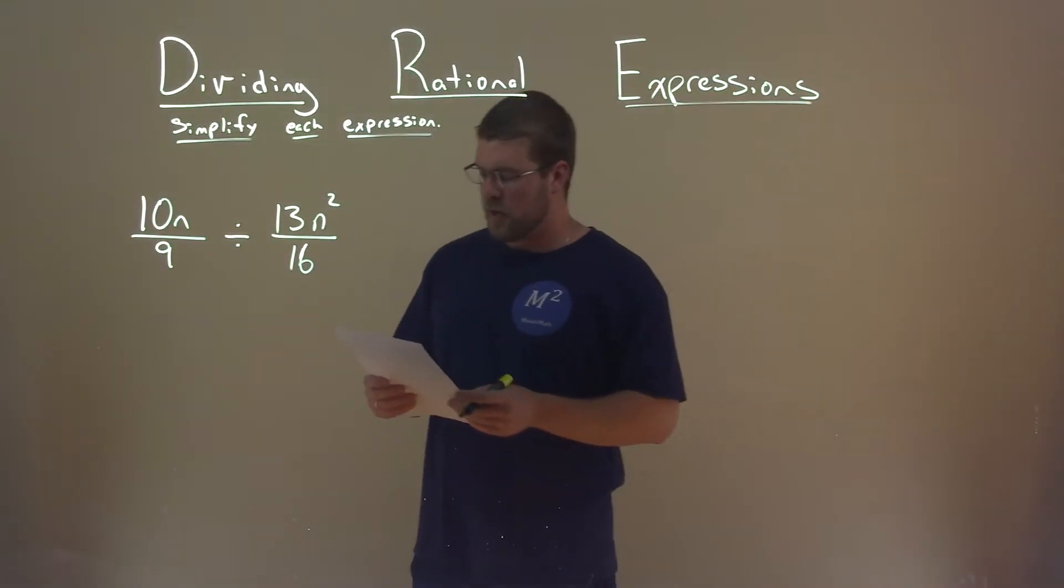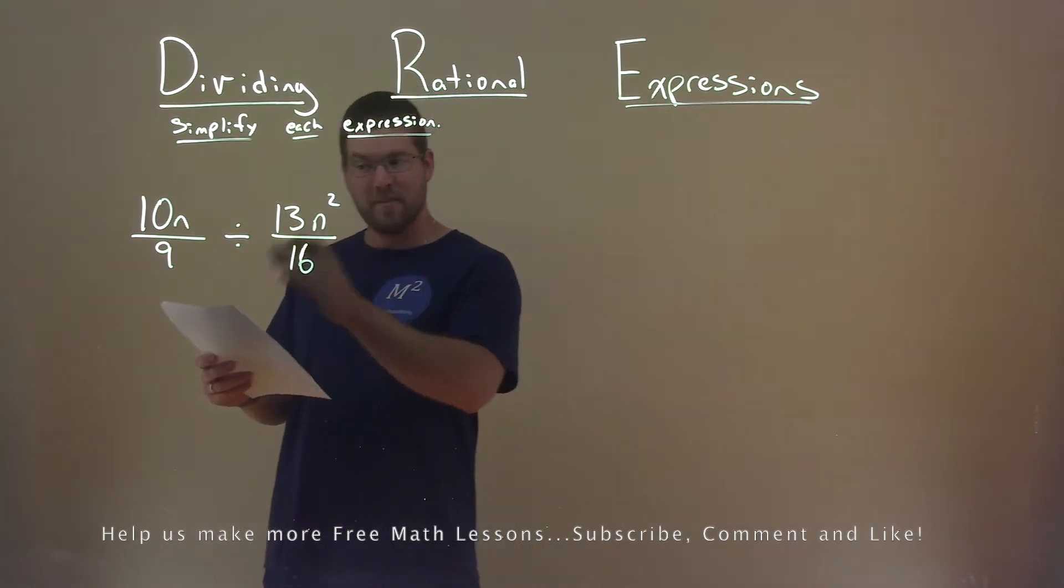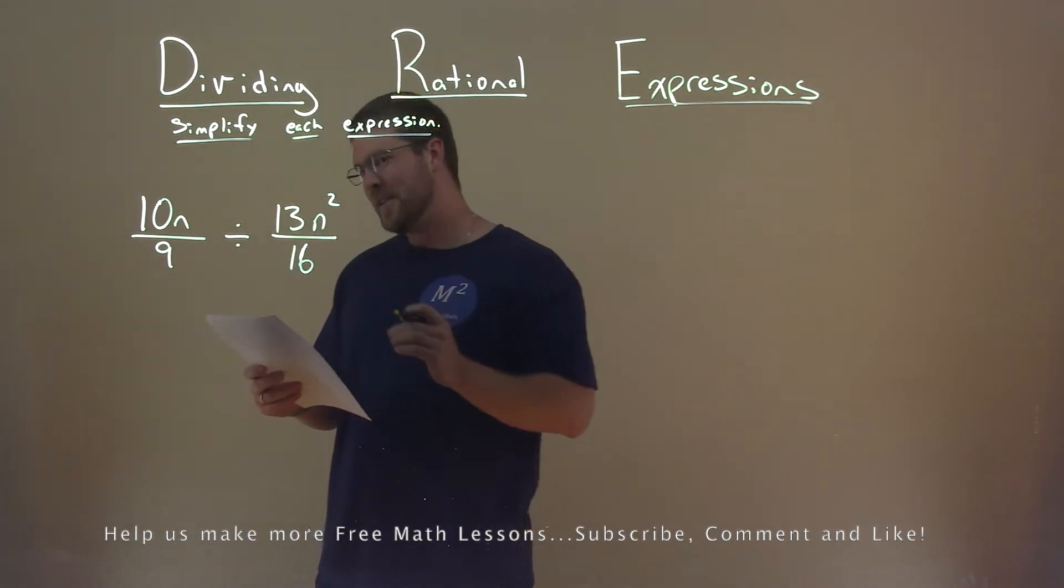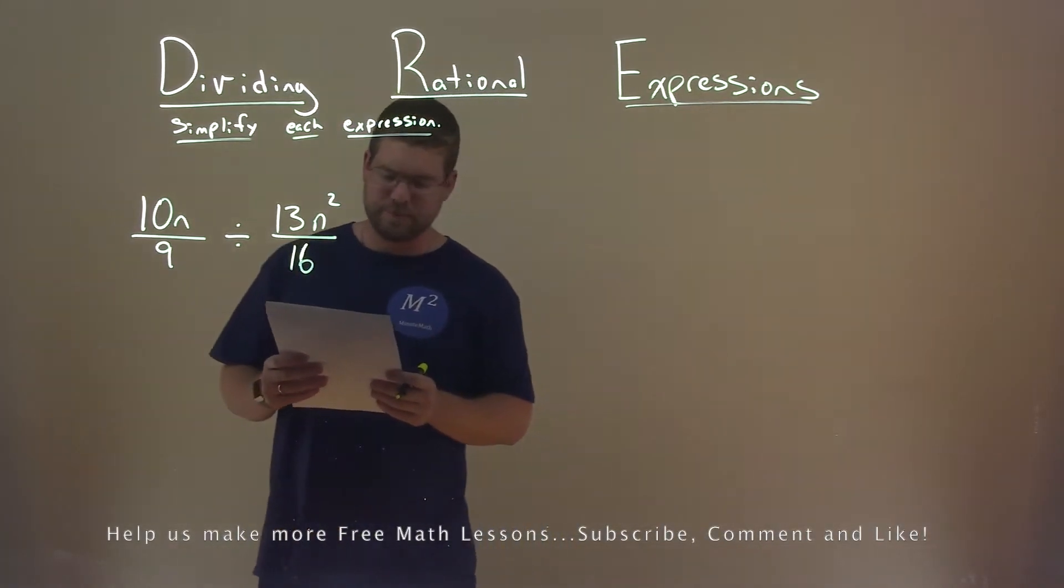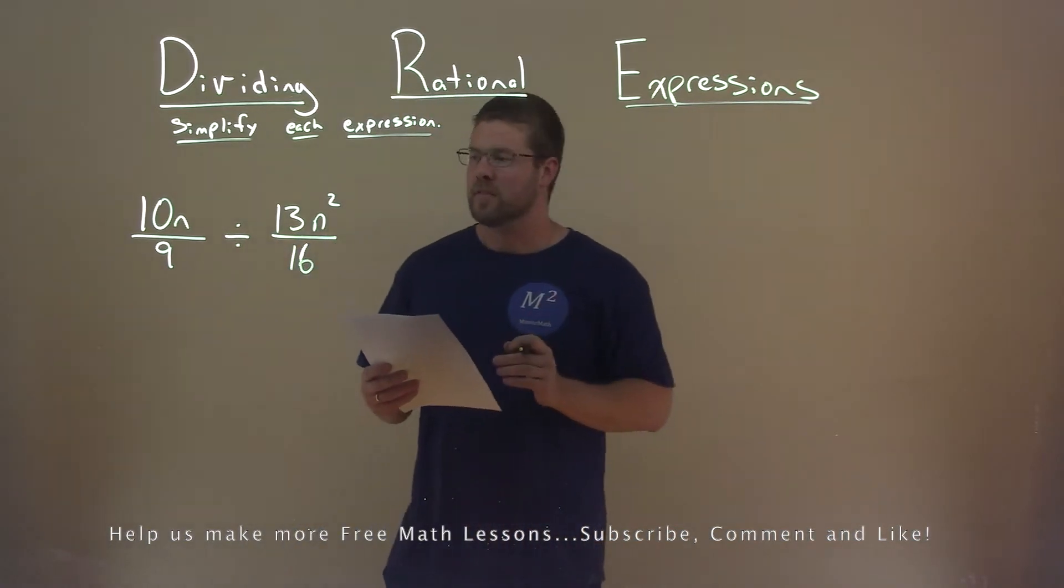We're given this expression right here: 10n divided by 9 divided by 13n squared divided by 16. And we need to simplify this expression.